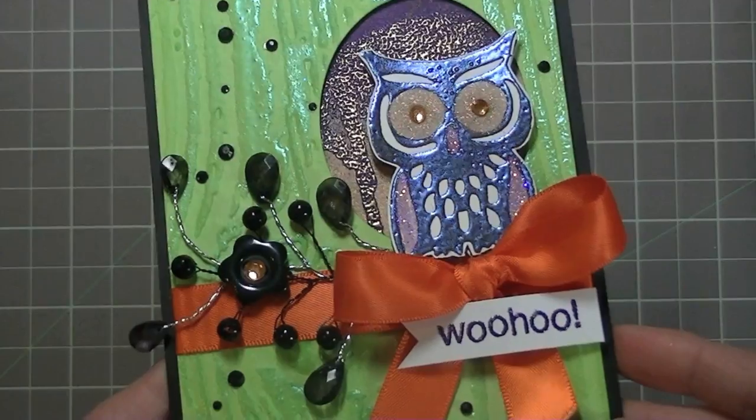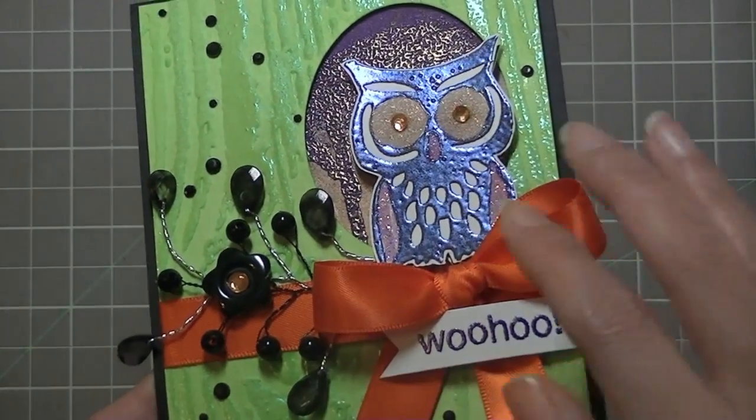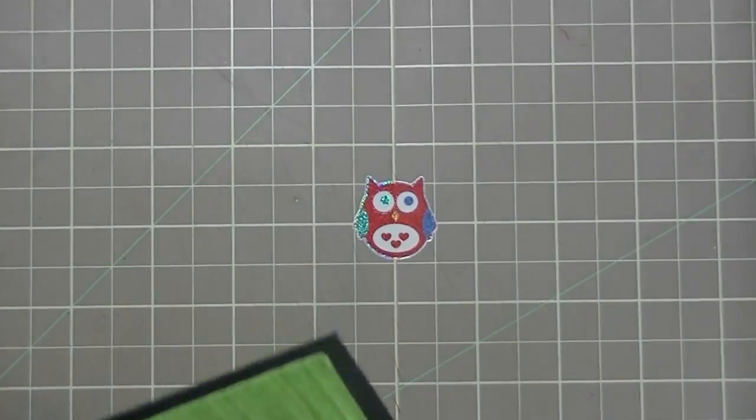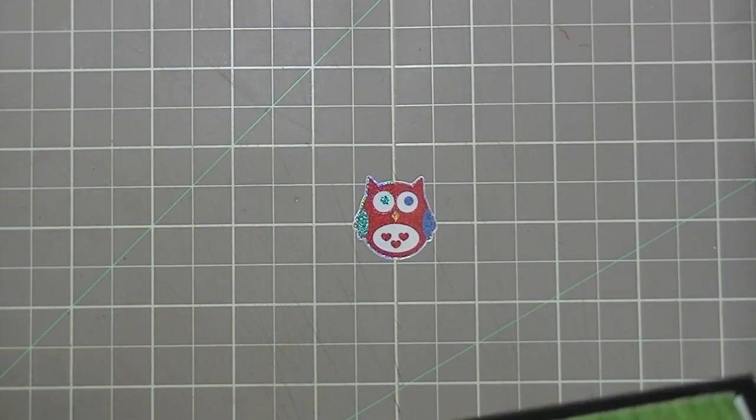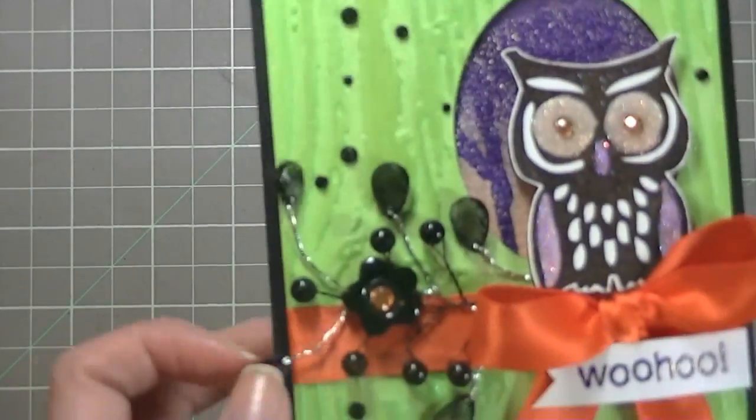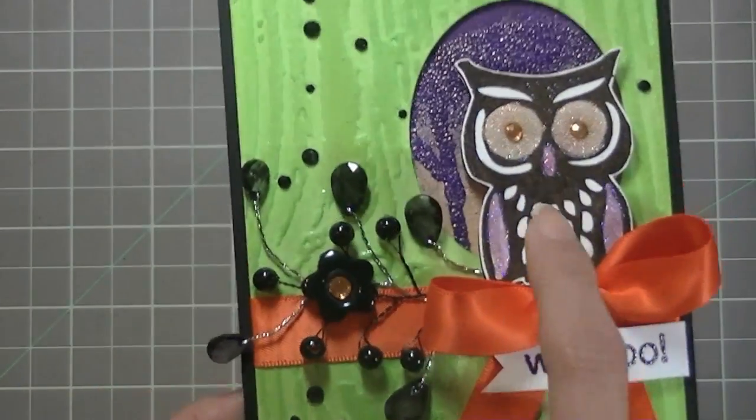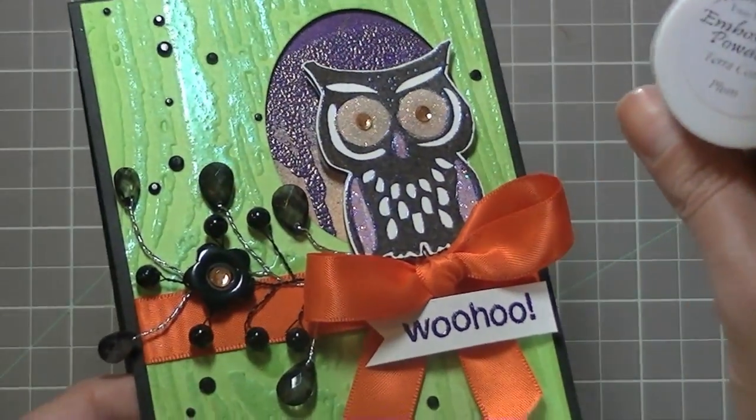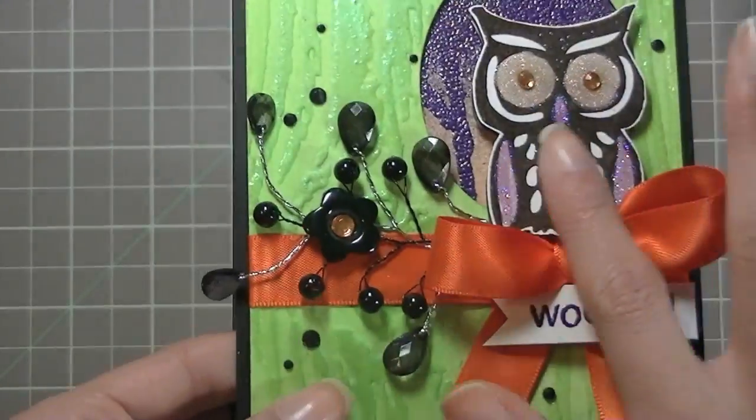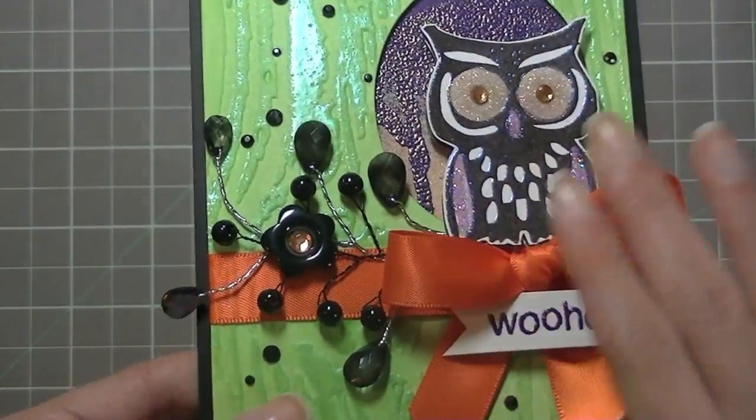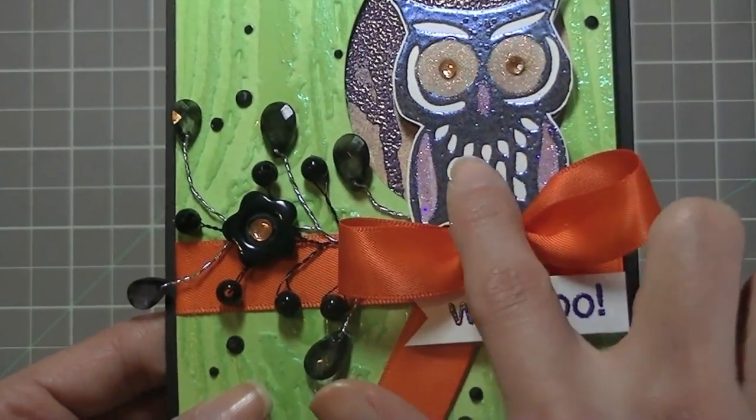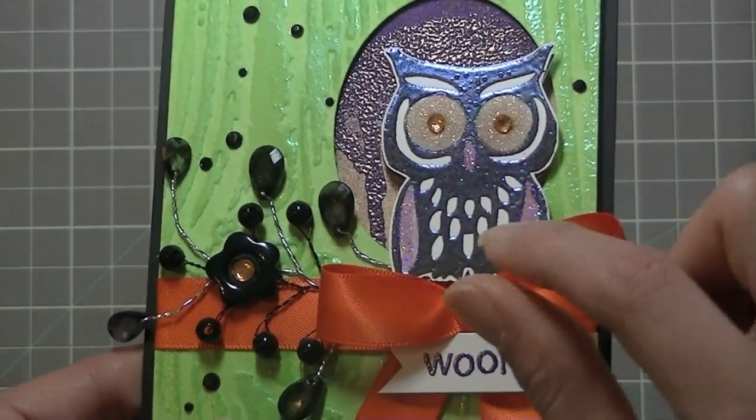Then I took this owl. You can see it in the embossing, the purplish bluish tinge to it. I took this Studio G dollar stamp, this owl right here, and stamped it using Versafine ink in black. Then on top of that I added the terracotta plum embossing powder. I knew that by overlaying the embossing powder on top of the black it wasn't going to look orange, but it was going to give me that bluish purplish tinge to it.